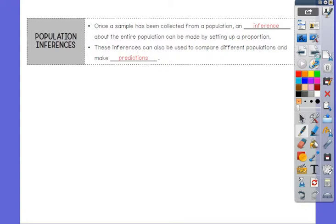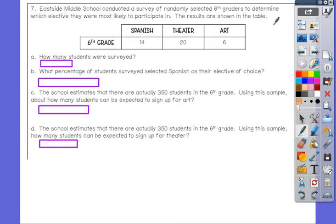Eastside Middle School conducted a survey of randomly selected sixth graders to determine which elective they were most likely to participate in. The results are shown in the table: Spanish, theater, and art. Part A says, how many students were surveyed? I would do 14 plus 20 plus 6 and I find that 40 students were surveyed.